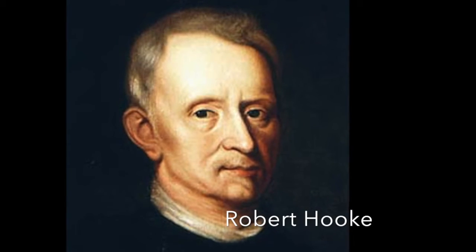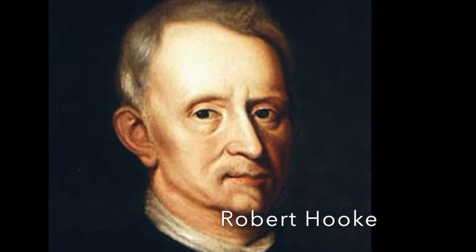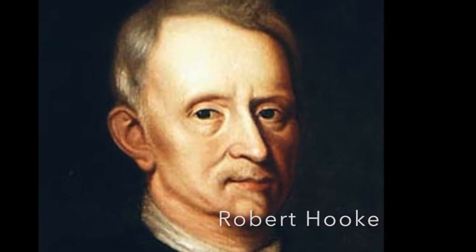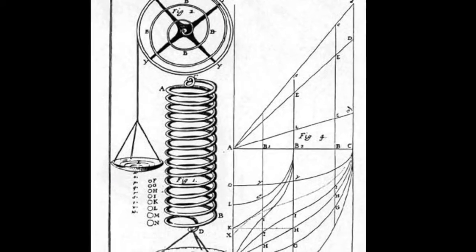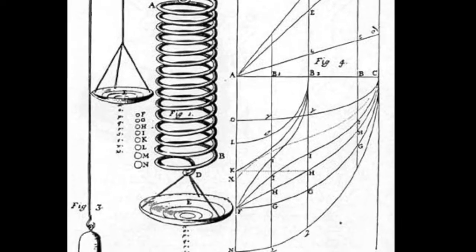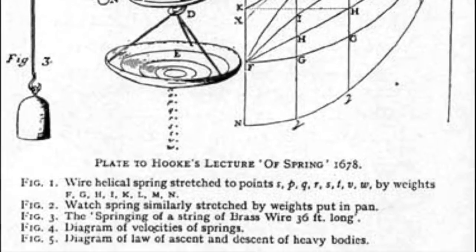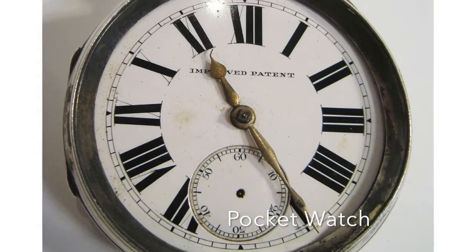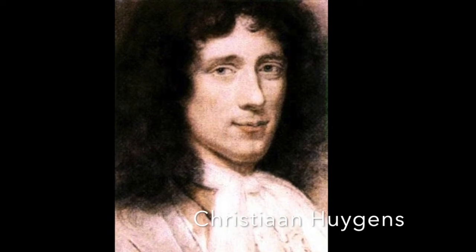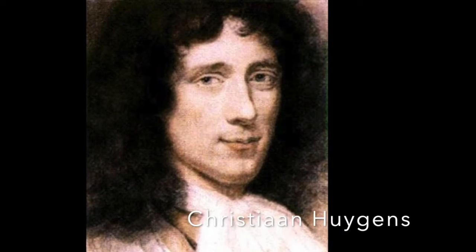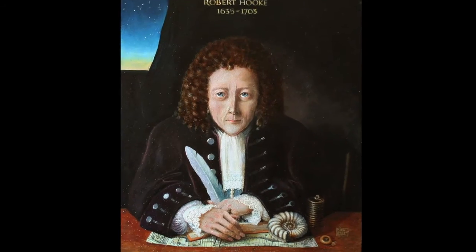It began with Robert Hooke — a rather interesting man in history, and you should check out more about him. He invented the spring balance, which was used in contemporary watches. The pocket watch was patented 10 years later by a Dutch mathematician and scientist, Christiaan Huygens.